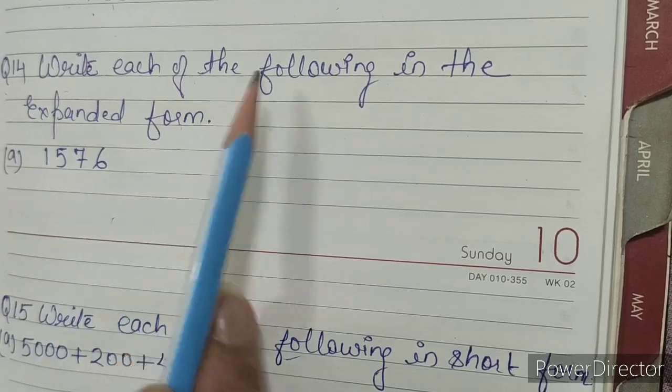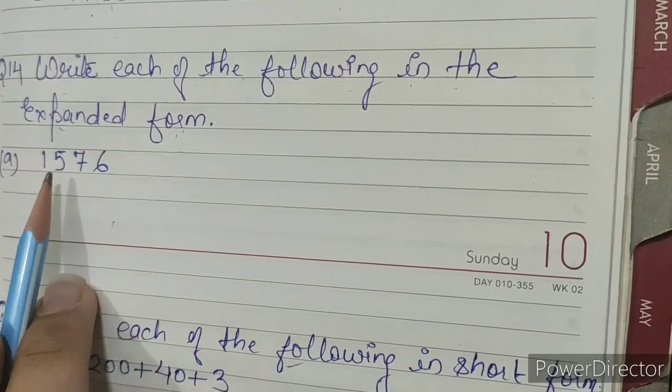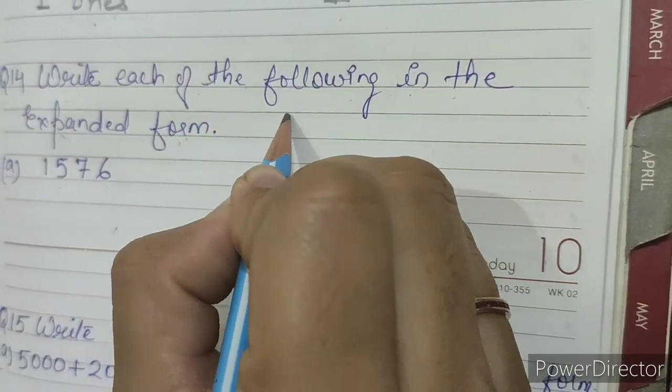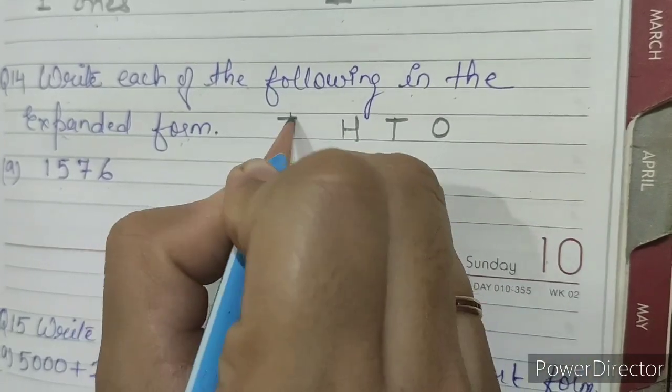Write each of the following in the expanded form. We will write each digit in the place value chart: ones, tens, hundreds, thousands.